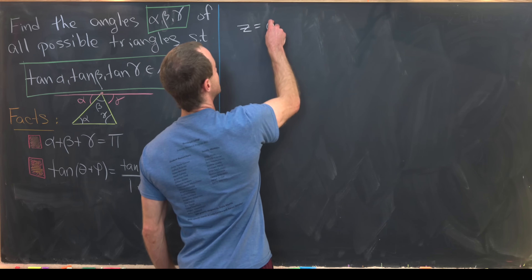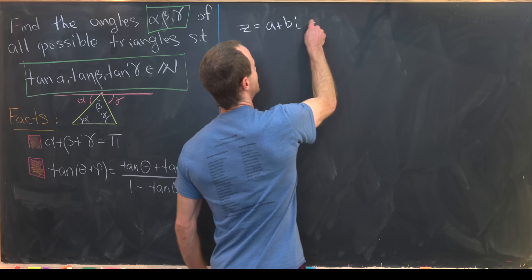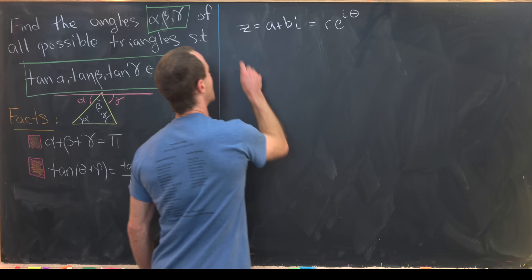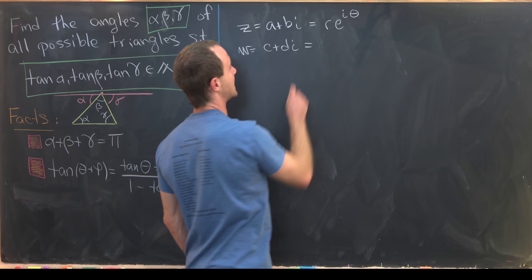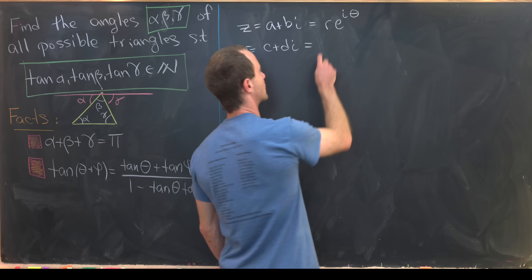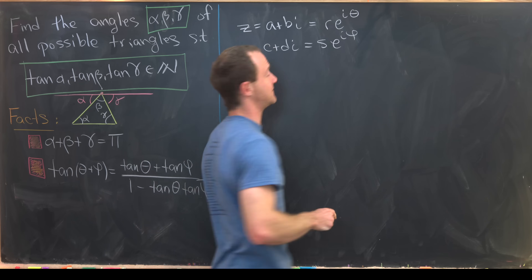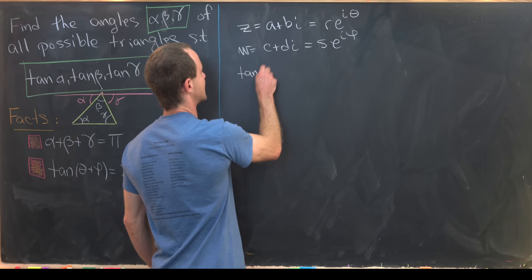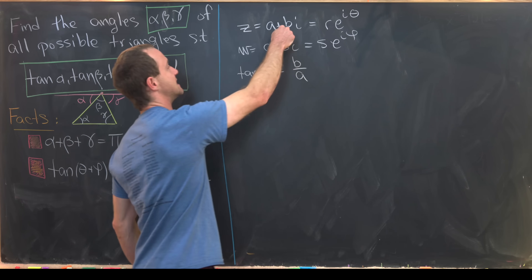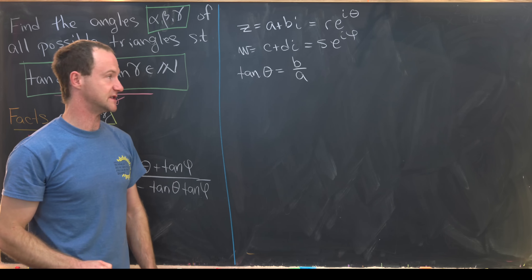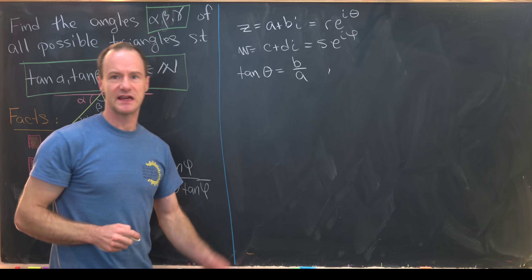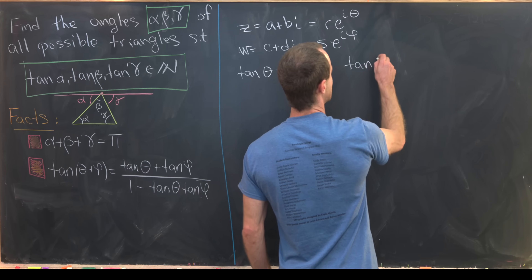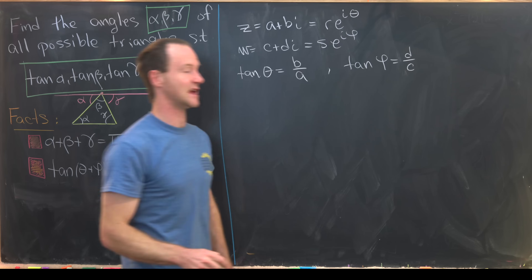Let z = a + bi, which also has polar form r·e^(iθ), and let w = c + di with polar form s·e^(iφ). From the polar-to-rectangular conversion, we know that tangent of θ equals b over a — the imaginary part of z over the real part of z. Similarly, tangent of φ equals d over c.